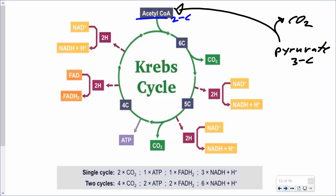A couple of other things happen in the intermediate step. CoA is an enzyme that is added to the two-carbon compound to form acetyl-CoA. Additionally, there is some reducing power produced: for each pyruvate, one NADH is produced when converting pyruvate into acetyl-CoA. So for each pyruvate, we get one NADH and one acetyl-CoA. Keep in mind that from glycolysis, each glucose generated two pyruvates, so we double those numbers per glucose. It is this acetyl-CoA that enters the Krebs cycle.